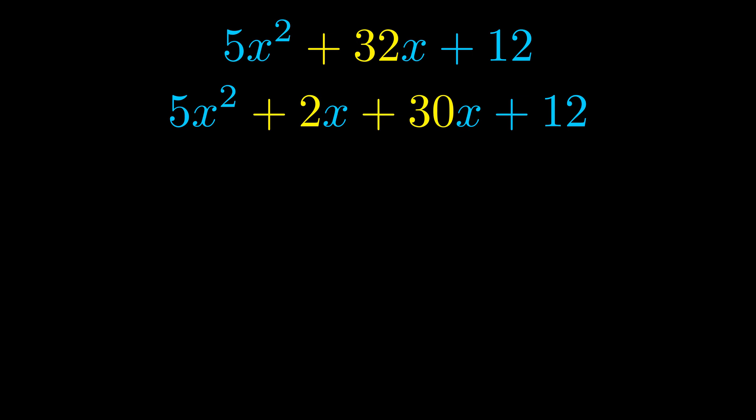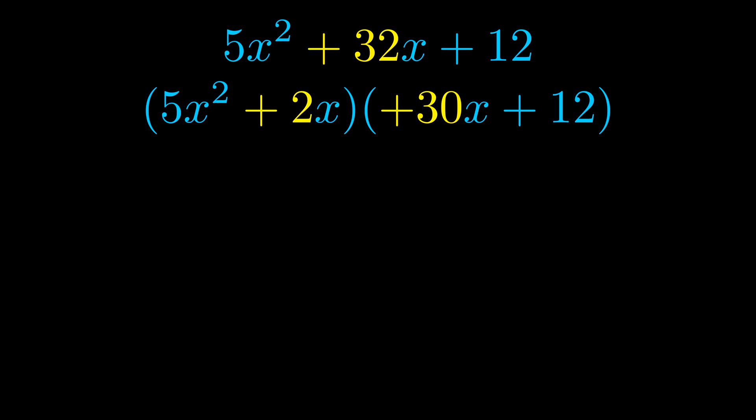Once we've done this we go ahead and we put parentheses around the first term and the last term. And we do that so that we can take the greatest common factor out of both terms. We can see the greatest common factor is now outside in green.